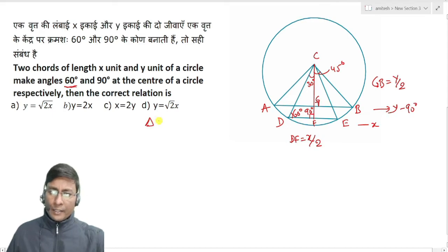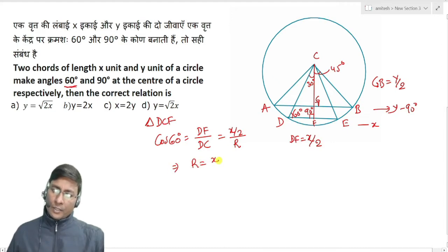Now we will work with two triangles. First, in triangle DCF with the 60 degree angle, we can write the cosine ratio: DF divided by the hypotenuse DC. So DF value is x by 2, and DC is the radius of the circle which is R. Therefore, R equals x by 2 divided by cos 60 degrees. This is equation number 1.